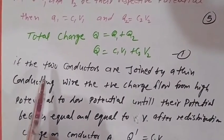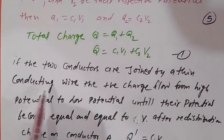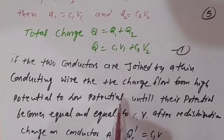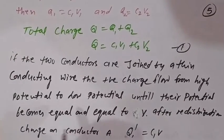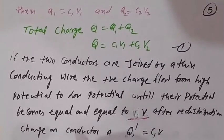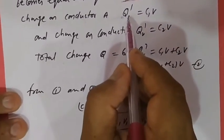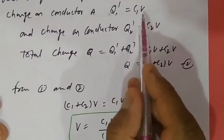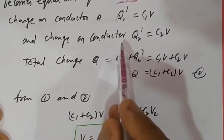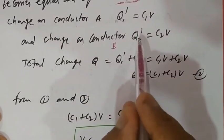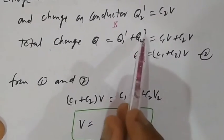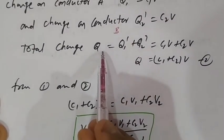Now if the two conductors are joined by a thin conducting wire, positive charge flows from high potential to low potential until their potentials become equal at a common value V. After redistribution, charge on conductor A is Q1' = C1V, and charge on conductor B is Q2' = C2V. Total charge Q = Q1' + Q2' because charge is conserved.